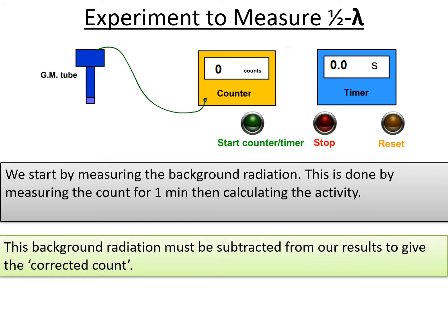This background radiation must be subtracted from the results to give the corrected count. It's called the corrected count because the background radiation is always there in the background. If we don't subtract it from our readings, that means our readings are always going to be higher because it's taking in the background radiation.